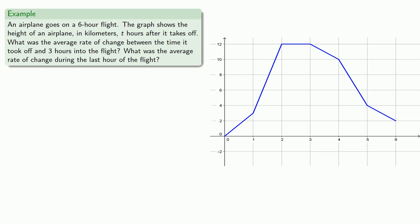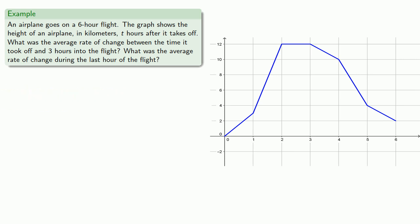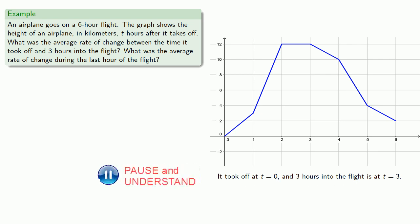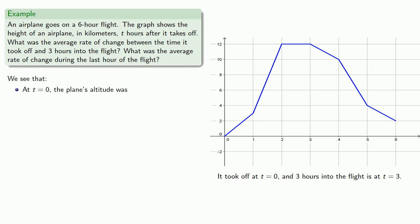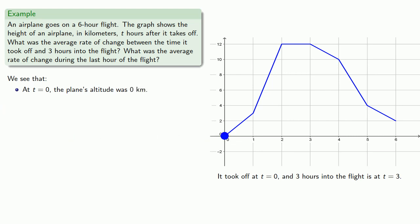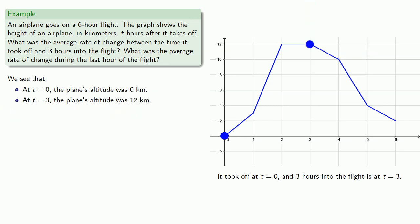Let's find the average rate of change between the time it takes off and three hours into the flight, and the average rate of change during the last hour of the flight. It took off at t equals zero, and three hours into the flight is at t equals three. We see that at t equals zero, the plane's altitude was zero kilometers, and at t equals three, the plane's altitude was twelve kilometers.